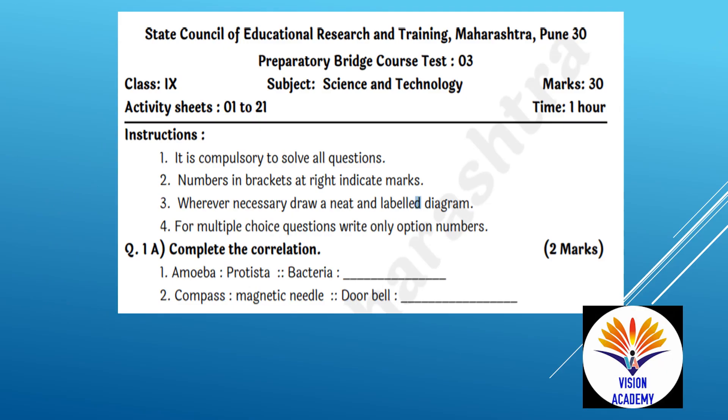First question: Complete the correlation. If Amoeba is Protesta, then what is bacteria? Bacteria is Monera.